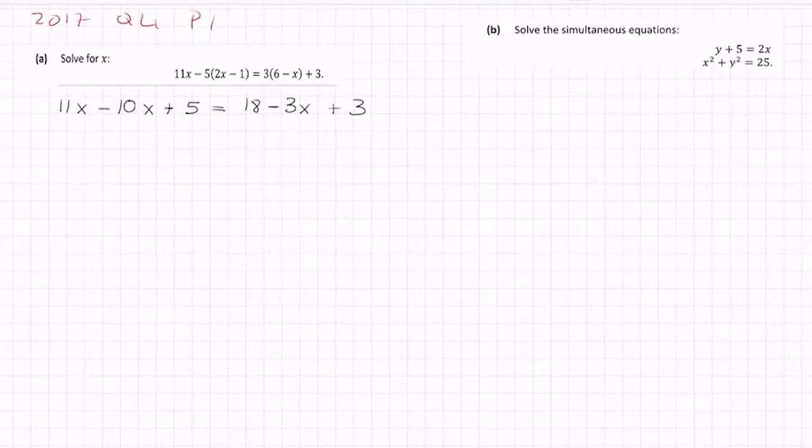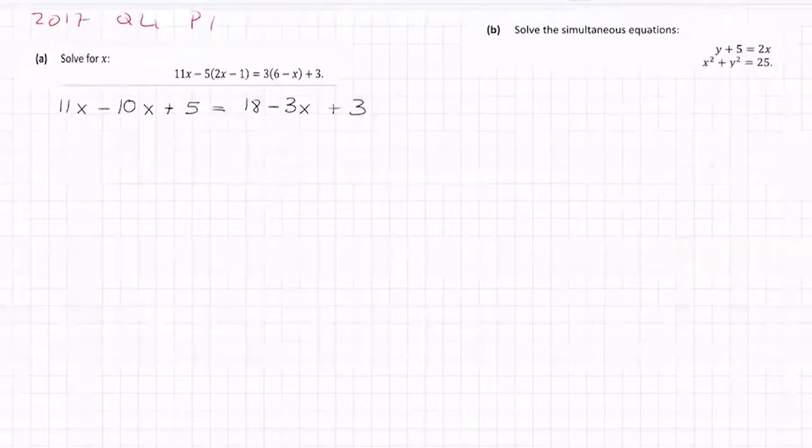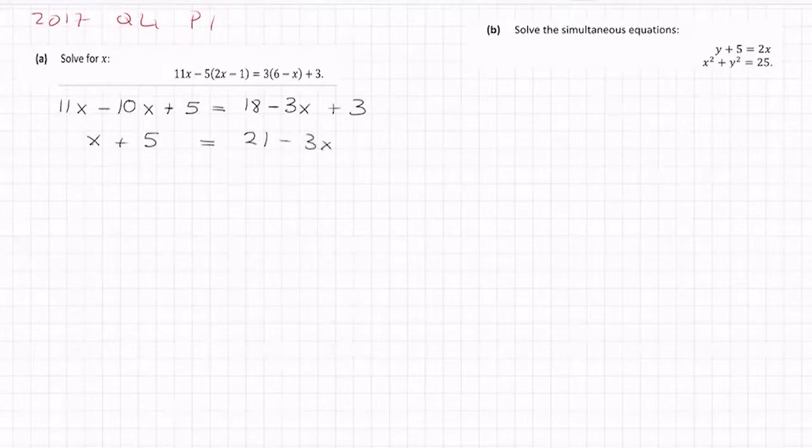So that's the left hand side, equals 3 by 6, 18. 3 by minus x is minus 3x. I'm done multiplying by 3 now, so I just take down the plus 3. So you can tidy up here now, or you can tidy up at the end. Let's tidy up here now. So 11x minus 10x is x plus 5 there on the left. 18 and 3 is 21 minus 3x. You can never merge x terms with numbers, you just can't do that.